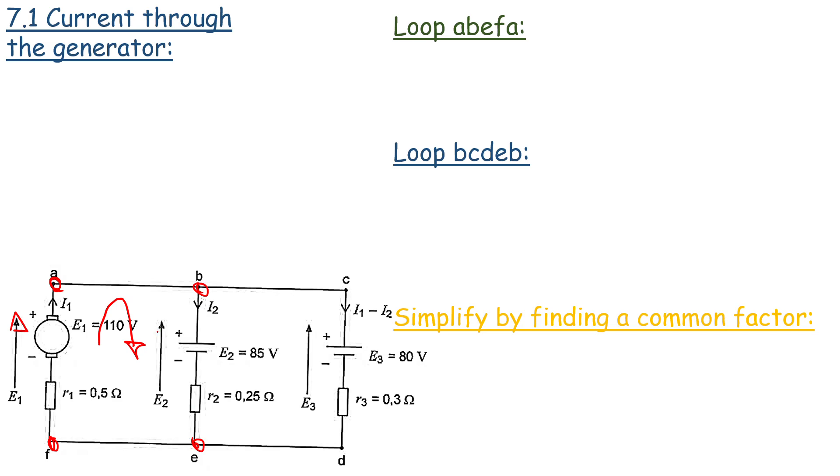However, our second battery is anti-clockwise. I1 times R1 will be positive and I2 times R2 will be positive.